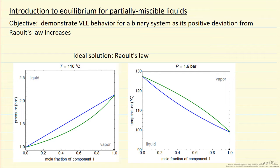So let's start with Raoult's Law. On the left, we have pressure versus mole fraction. For an ideal solution, the bubble line, which is the blue line, is a straight line on a PXY diagram and it's a curve on the TXY.